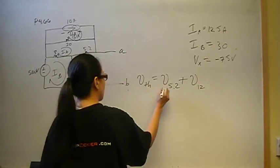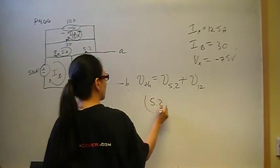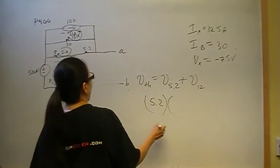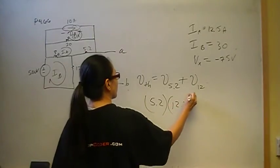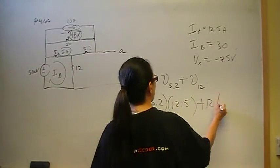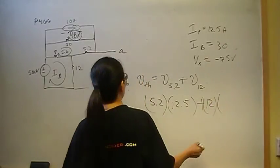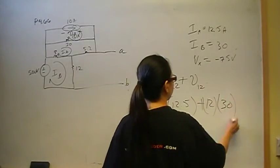Okay. And that's going to be 5.2 times I-A, which is 12.5. And then plus 12 ohms times I-B, and that's 30.